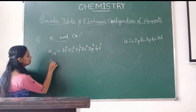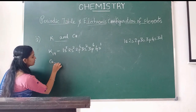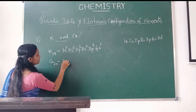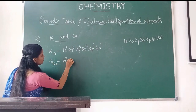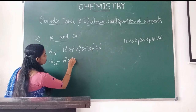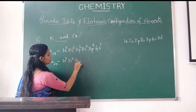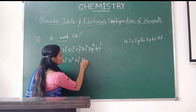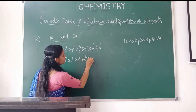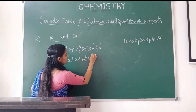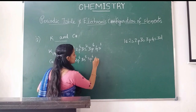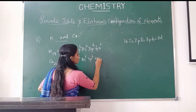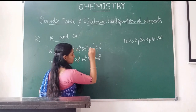Then calcium, atomic number 20. Electronic configuration: 1s2, 2s2, 2p6, 3s2, 3p6, 4s2.